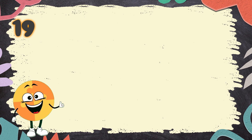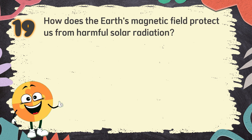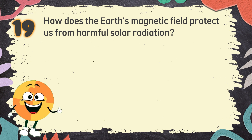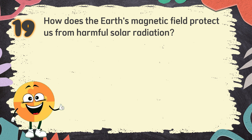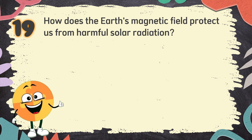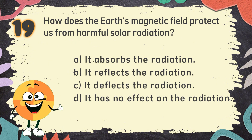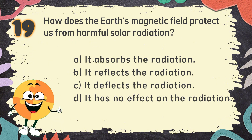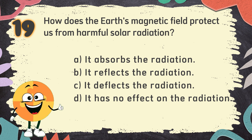Number 19. How does the Earth's magnetic field protect us from harmful solar radiation? The choices are: A. It absorbs the radiation, B. It reflects the radiation, C. It deflects the radiation, D. It has no effect on the radiation.